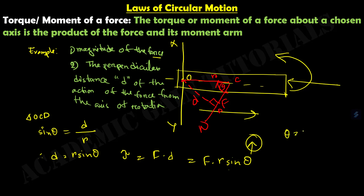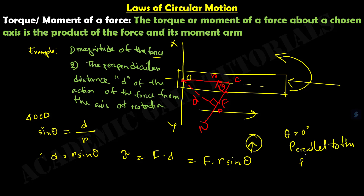If theta equals 0 degrees — meaning force is applied parallel to the plane or surface — then the torque will be zero. When theta equals 90 degrees, the torque will be maximum. This is the core concept of torque.